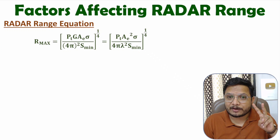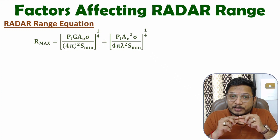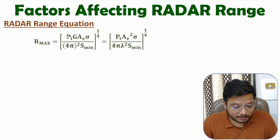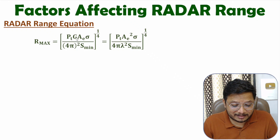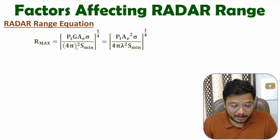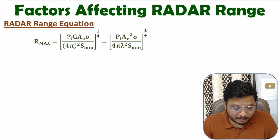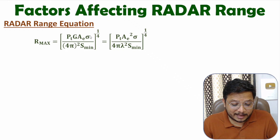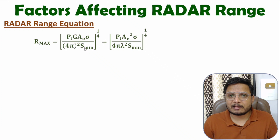If you have seen my last two videos of the radar engineering lecture series, I explained and derived the equation of radar range: R_max = (PT × G × AE × σ) / (4π² × S_min) raised to the power 1/4. Here PT is transmitted power, G is gain of antenna, AE is effective area of antenna, σ is area of target, and S_min is the minimum detectable signal of radar.